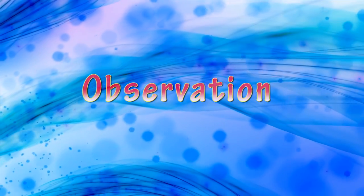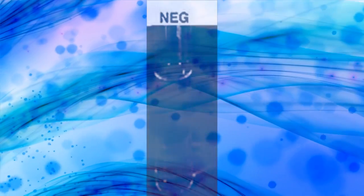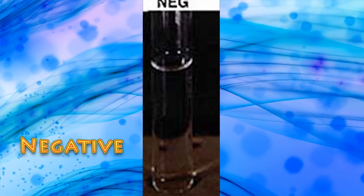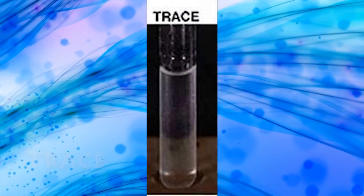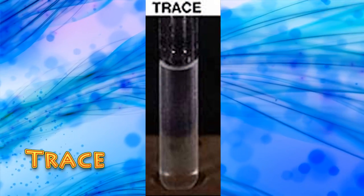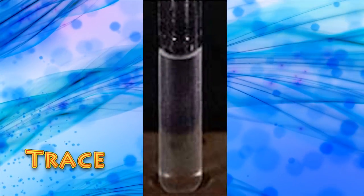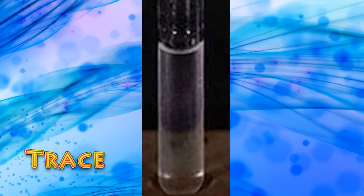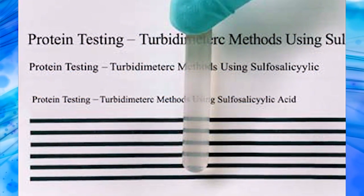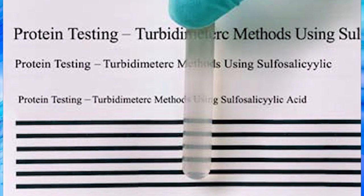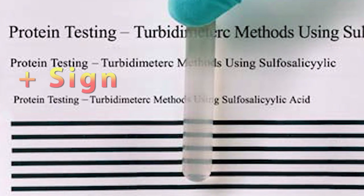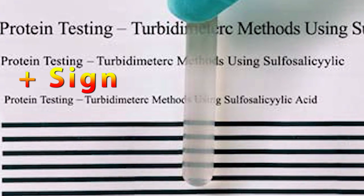Observation: if the urine sample remains clear, the sample is negative for protein. If there is faint turbidity against a dark background, the urine sample contains a less amount of protein. If there is definite turbidity but you can still read letters through the urine sample, we give a plus sign for protein.